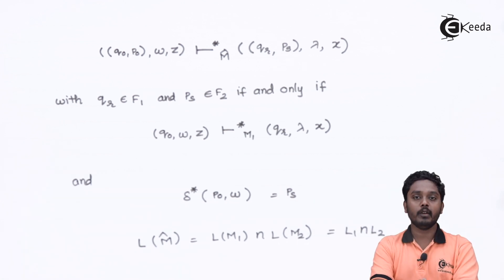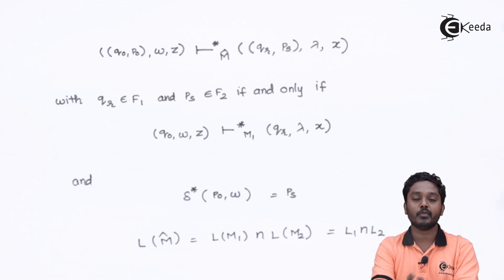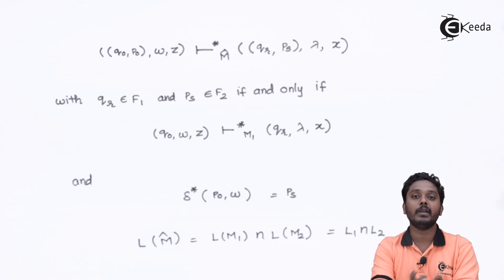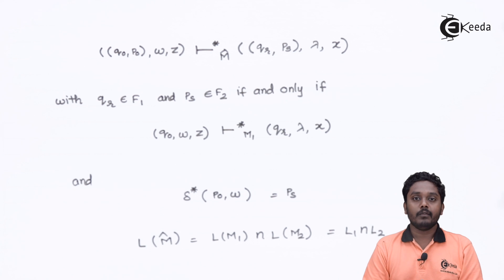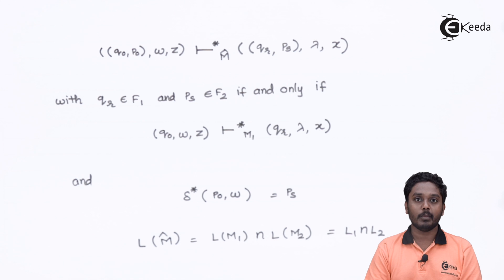What we have proven is that given a context-free language and a regular language, their intersection is a context-free language because it is possible to design a PDA for it. Hence, context-free languages are closed under regular intersection. We will now be moving on to decidable properties of context-free languages.